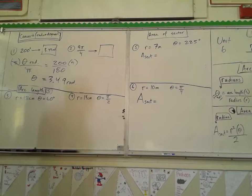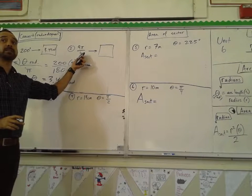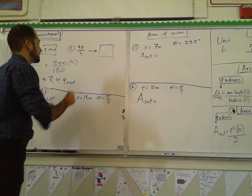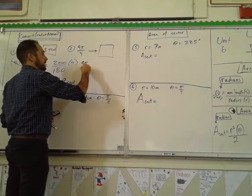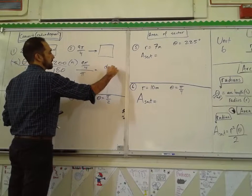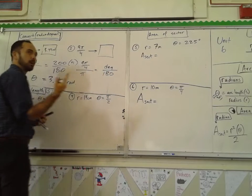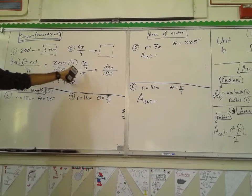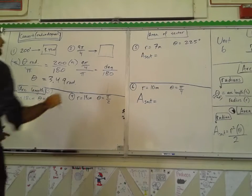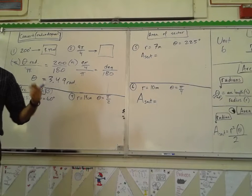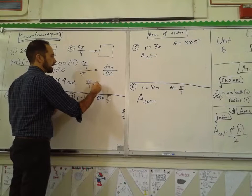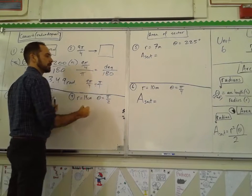Anytime you see π in the measurement of an angle, you know it's in radians. Now going the other way — from 9π/4 to degrees — we use the same proportion: radian measure over π equals degree measure over 180. When we divide 9π/4 by π, the π's cancel out.